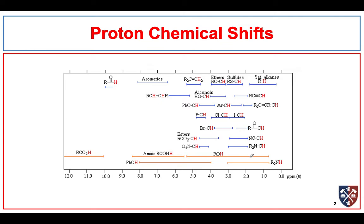We've talked about this in class. Look at all these protons down here with the very wide ranges — these are the red protons. All of these are exchangeable hydrogens, so they have a very wide range of chemical shifts depending on their particular environment and the solvents at the time because they're exchangeable.